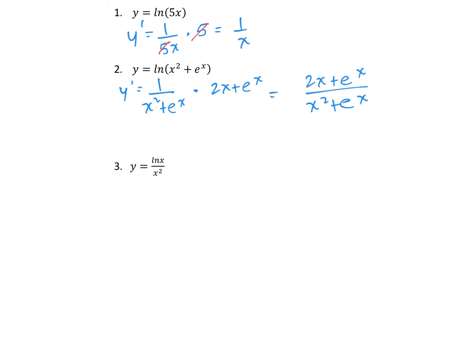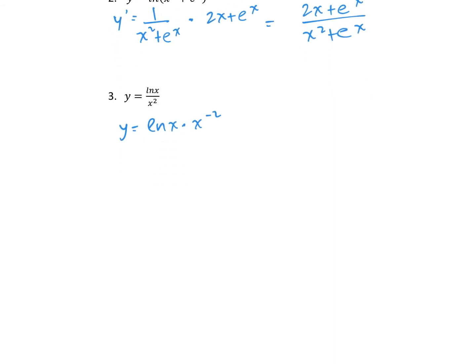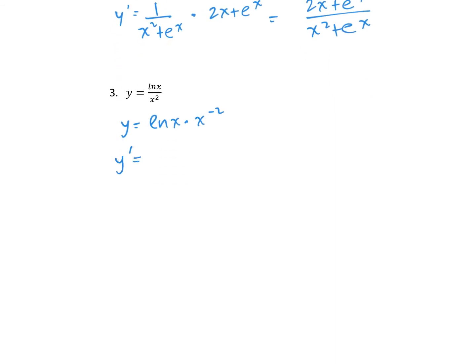For question 3, you can use the quotient rule, but I prefer changing it to a product rule for simpler cases. The derivative of ln(x) is 1 over x, plus ln(x) times the derivative of x to the negative 2, which is negative 2x to the negative 3. Let's simplify this.